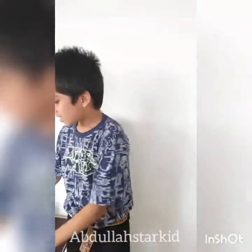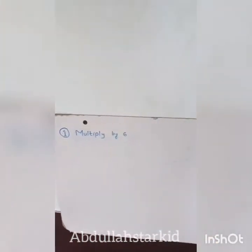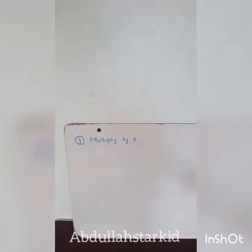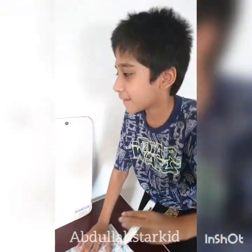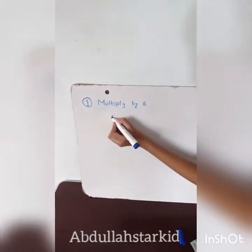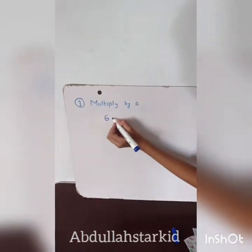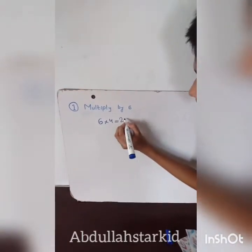Now let's get started. The first trick is to multiply by six. You have to use an even number. In the six times table you can see even numbers like two, four, six, eight, and ten. For example, if you multiply six with four, you get the answer 24.